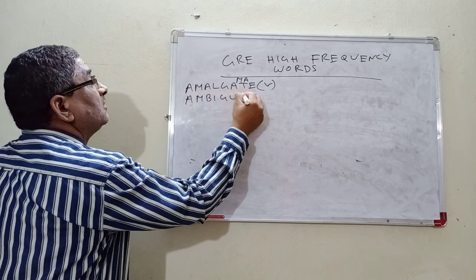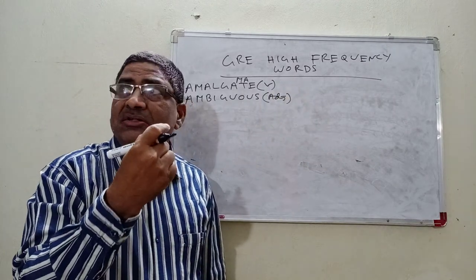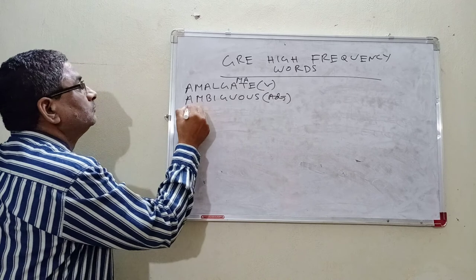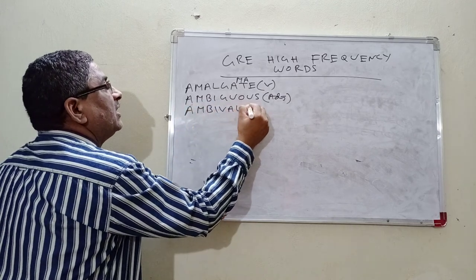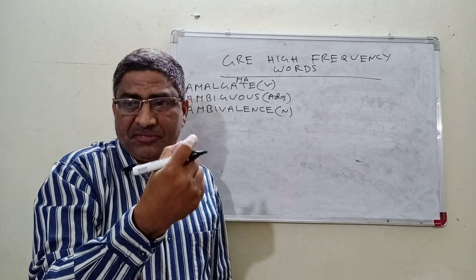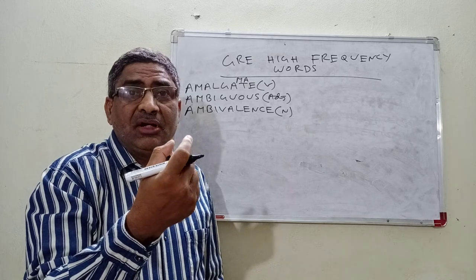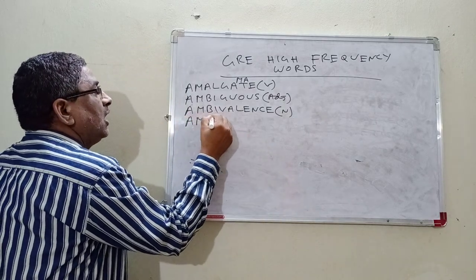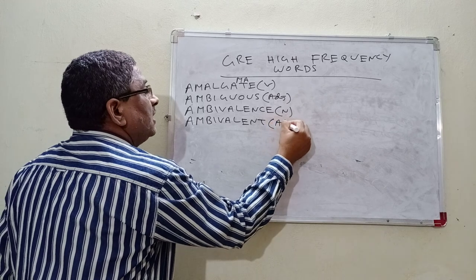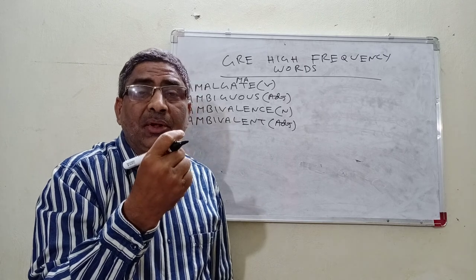Ambiguous — this is an adjective. Ambiguous means not clear to understand. The noun form is Ambivalence. What is ambivalence? The state of having a contradictory or emotional attitude. The adjective form is Ambivalent — having contradictory or emotional attitude.